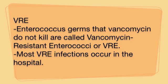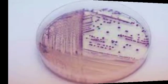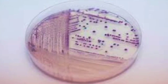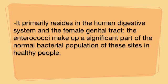Enterococcus germs that vancomycin cannot kill are called vancomycin-resistant Enterococci, or VRE. Most VRE infections occur in the hospital. It primarily resides in the human digestive system and in the female genital tract. The Enterococci make up a significant part of the normal bacterial population of these sites in healthy people.